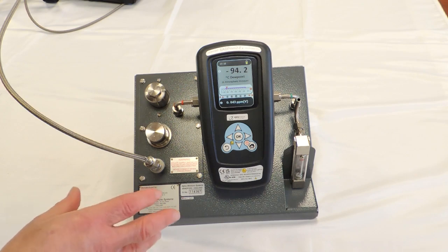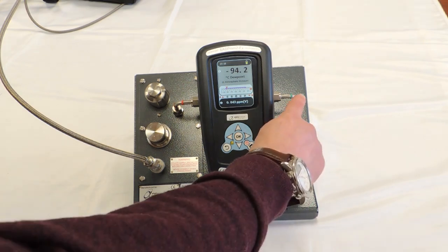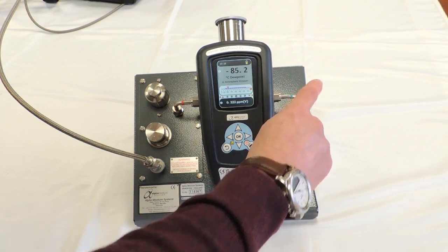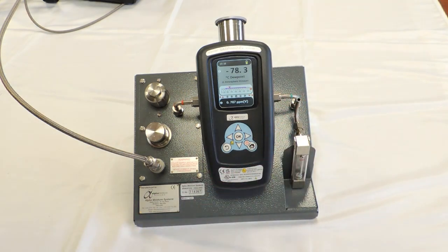We've now purged through the PSS and the instrument for a few minutes. We then raise the head of the instrument by blocking the outlet like this. Release and you'll notice that the dew point responds very quickly and falls until it reaches equilibrium with the sample gas dew point.